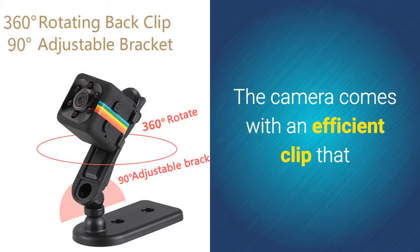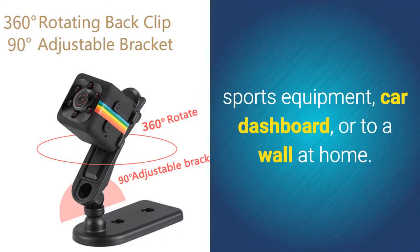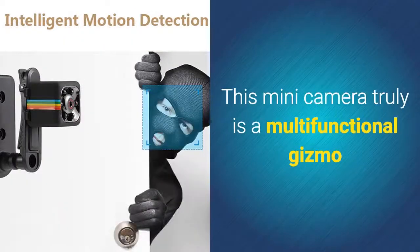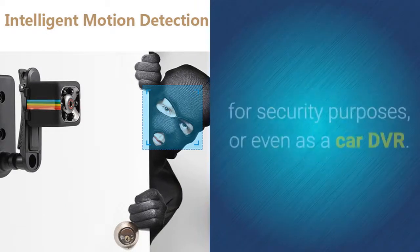The camera comes with an efficient clip that allows you to easily attach it to your sports equipment, car dashboard, or to a wall at home. This mini camera truly is a multifunctional gizmo, as it can be used for snapping pictures outdoors or for security purposes.